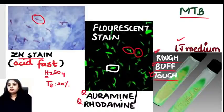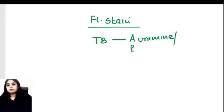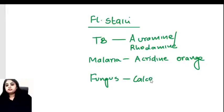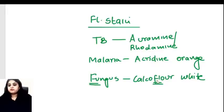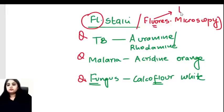Fluorescent stain summary: for TB it is auramine and rhodamine; for malaria it is acridine orange; for fungal organisms it is Calcofluor white. When using a fluorescent stain, you use a fluorescent microscope with an ultraviolet light source. All of this now connects together — fluorescent stain → fluorescent microscope → ultraviolet light.